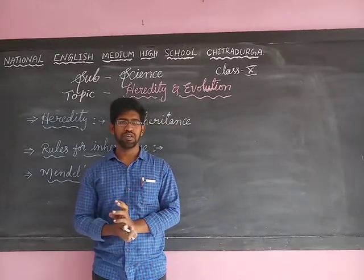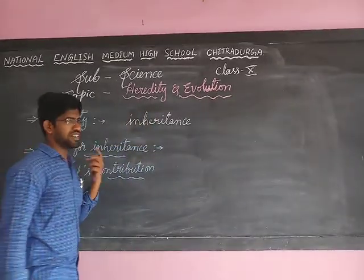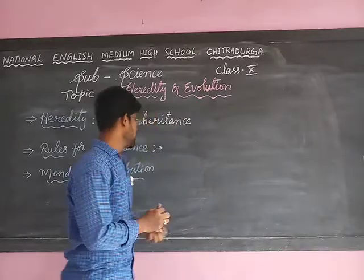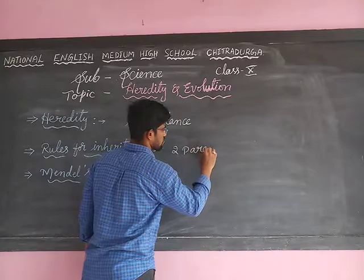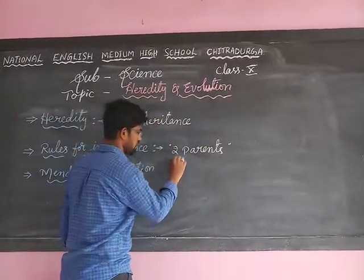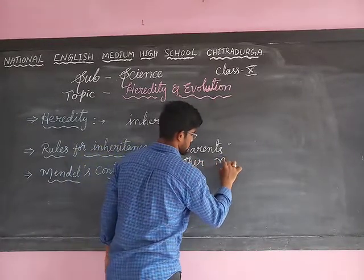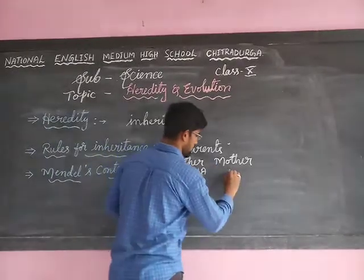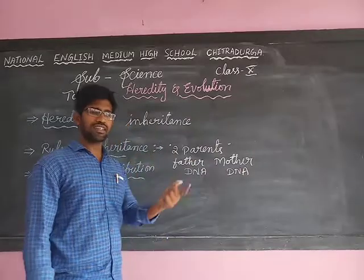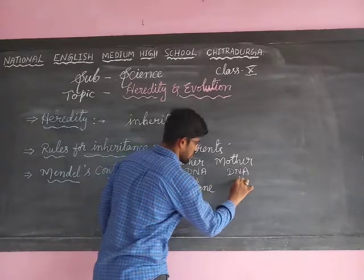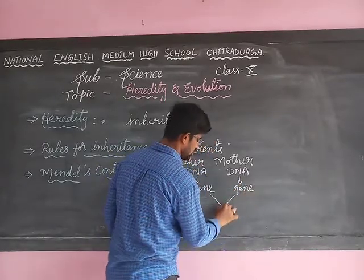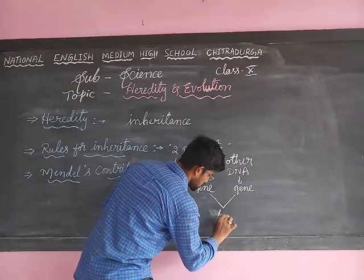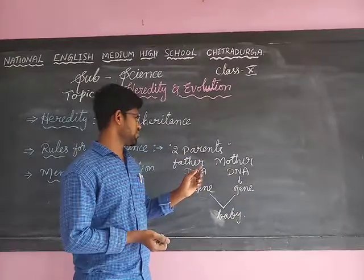But not all the characteristics are transferred — remember that. Now, the rules for inheritance: what are the rules for the transfer of characteristics from parents to children? The main important rule is that they need two parents. Both mother and father are necessary to transfer the characteristics. Both persons have their own DNA and their own unique characteristics. From their DNA, they are transferring the genes, and these genes carry the characteristics. From both father and mother, they are given to a baby, so the baby has the characteristics of both mother and father.